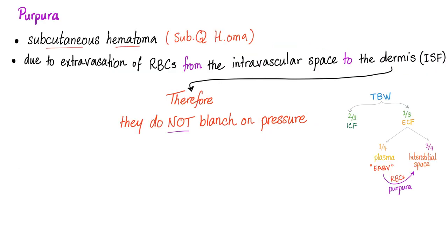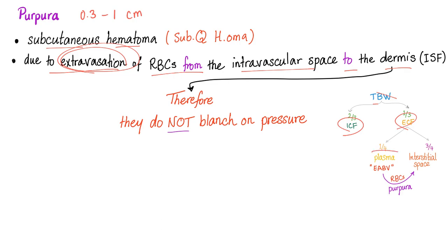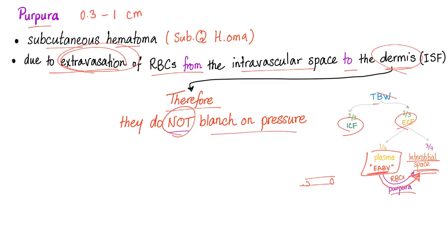Purpura — definition. Subcutaneous hematoma from 0.3 all the way up to 1 cm. It's bigger than petechiae, yet smaller than ecchymosis. Due to extravasation of red blood cells from the intravascular space to the dermis. Your body compartments are the intracellular and the extracellular; the extracellular includes plasma within the blood vessel and the interstitial space outside. Purpura is the extravasation of red blood cells from within the blood vessel to the interstitial space, specifically the dermis. Therefore, purpura do not blanch on pressure, because these are red blood cells stuck in the dermis — no matter how hard you press on them, they're not going to escape.